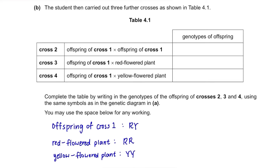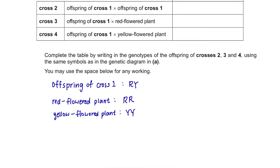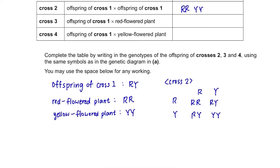All this information was given in the previous question. Cross 2: offspring of cross 1 and another offspring of cross 1, that would be R-Y and R-Y, resulting in R-R, R-Y, R-Y, and Y-Y. The answer is R-R, Y-Y, R-Y.